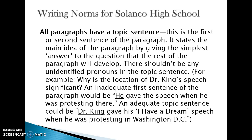There shouldn't be any unidentified pronouns in your topic sentence. So if I were to ask why is the location of Dr. King's speech significant, and you were to say 'he gave the speech when he was protesting there,' your lack of specificity is really going to hurt your reader because that could be a number of people. If you were to say 'Dr. King gave his I Have a Dream speech when he was protesting in Washington, D.C.,' you've really raised the level of specificity, which is ideal for a topic sentence. Once you get into talking about your subject, it's okay to then use pronouns as long as they're clearly relevant to who you're talking about.